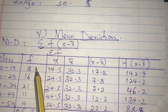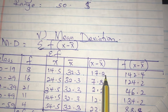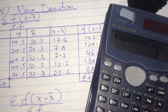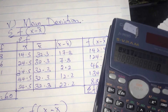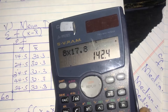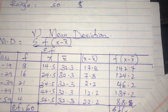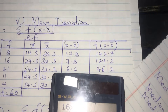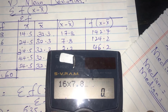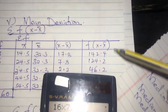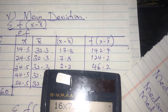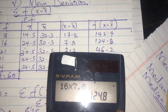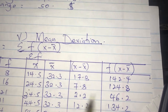Next we need the column of f times |x minus x̄|. We multiply each frequency by its corresponding |x minus x̄| value. The first one is 8 times 17.8, which equals 142.4. The next is 16 times 7.8, which equals 124.8. We do the same thing for the rest of the figures.